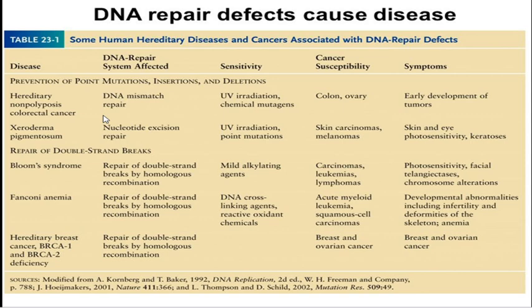Bloom syndrome, Fanconi anemia, and hereditary breast cancer arise when repair of double-strand breaks by the homologous recombination pathway is non-functional. Homologous recombination generally corrects damage caused by mild alkylating agents, DNA cross-linking agents, and reactive oxygen species — all three of which affect both strands of DNA. So the homologous recombination pathway repairs double-strand breaks.